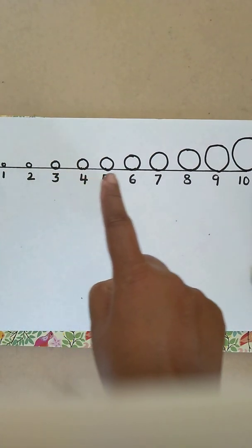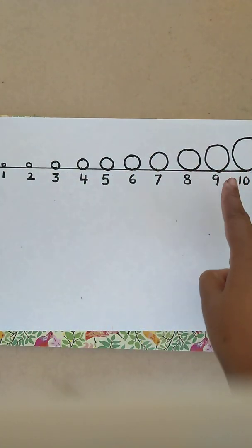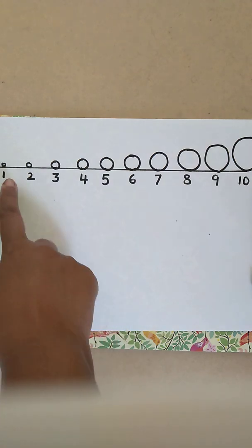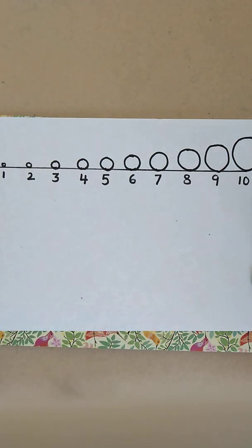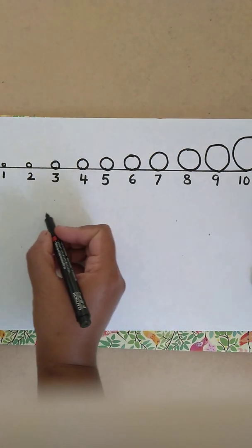So 10 has the biggest circle and 1 has the smallest. Now looking at this, the child can recognize which number is bigger. So now when we give a child 2 numbers, say, can you tell me which is the bigger number?